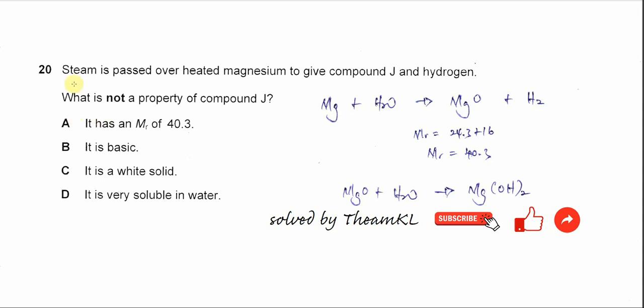Question 20: Steam is passed over heated magnesium to give compound J and hydrogen. What is not a property of compound J? First, you need to know the reaction equation. Magnesium with steam